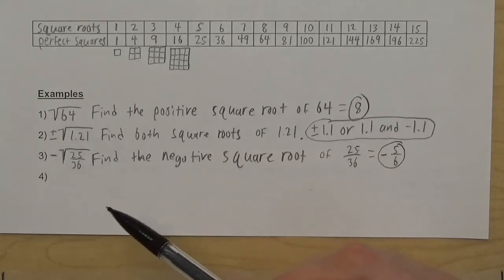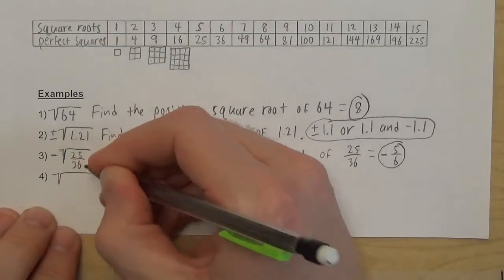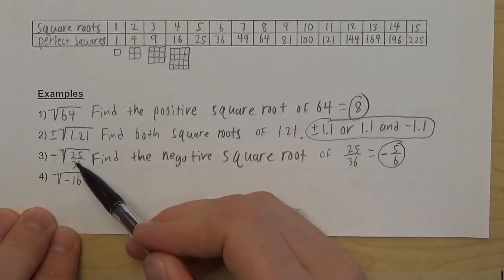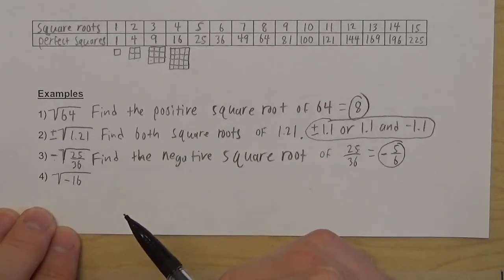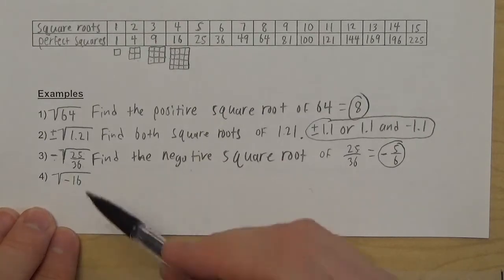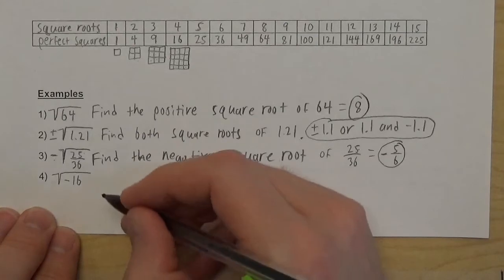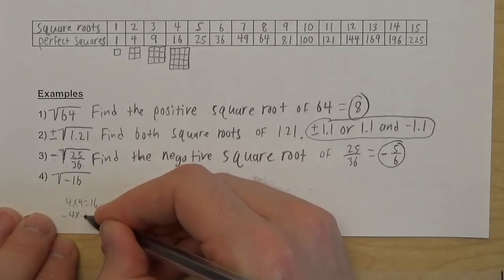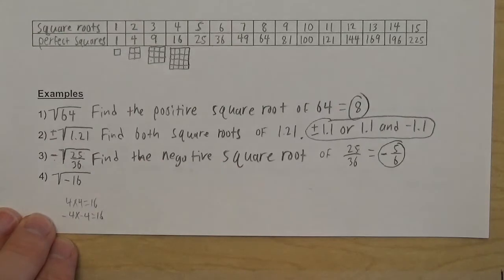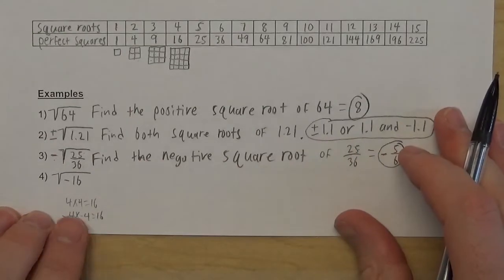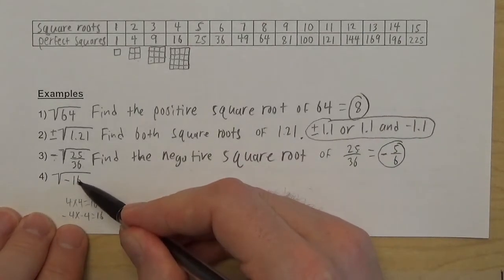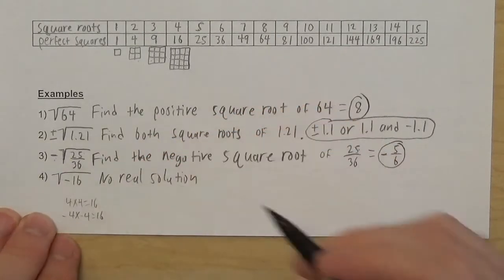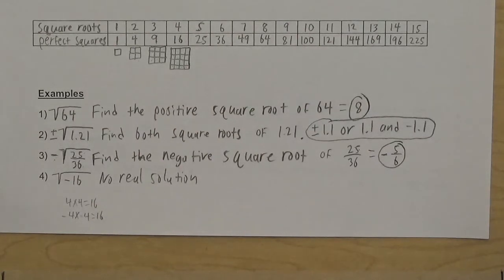You might also see something asking you to take the square root of a negative number — this is different from asking for the negative square root. If you see the square root of negative 16, you're asking: what number times itself equals negative 16? Well, 4 times 4 equals positive 16, and negative 4 times negative 4 also equals positive 16. There is no number that times itself equals negative 16, so if you see the square root of a negative number, we write: no real solution.